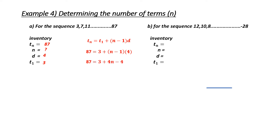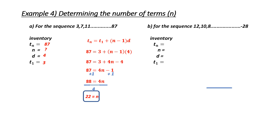4 times n is 4n, and 4 times negative 1 is negative 4. I combine like terms: 3 plus negative 4 is negative 1, so I now have 87 equals 4n minus 1. To isolate n, I add 1 to both sides, giving me 88 equals 4n. I then divide both sides by 4, giving me n equals 22. So 87 is the 22nd term in this sequence.